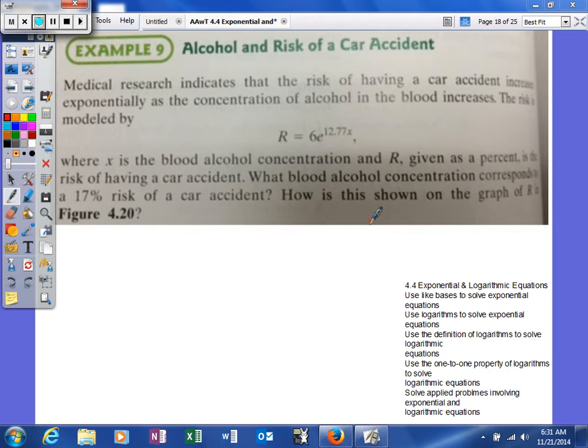The risk is modeled by R = 6e^(12.77x), where x is the blood alcohol concentration and R, given as a percent, is the risk of having a car accident. What blood alcohol concentration corresponds to a 17% risk of having a car accident? How is this shown on the graph?